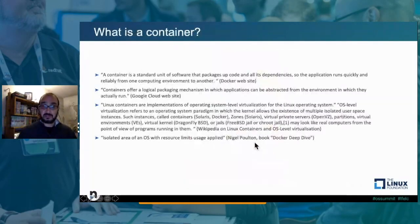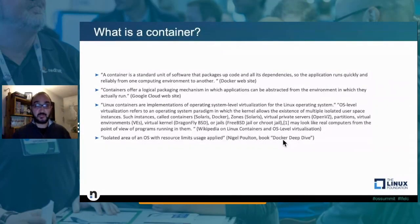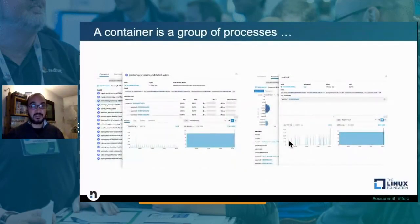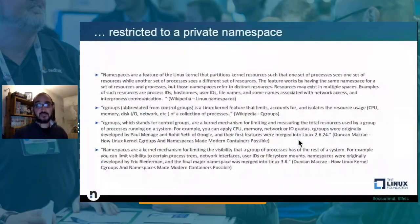Let's start with the container. There are different definitions to define a software container. A container is a standard unit of software to package up code and its dependencies. It is an operating system layer virtualization. At the end, a container is a group of processes. You can see that a container contains a set of processes, but if you analyze those processes in the operating system, you see exactly the same processes directly from the OS. It's a group of one or multiple processes restricted to a private namespace.